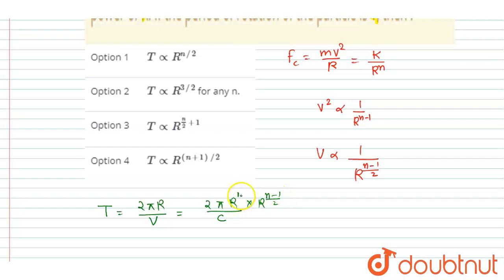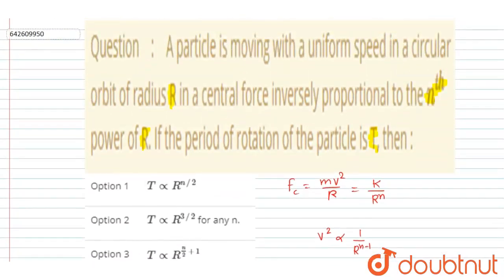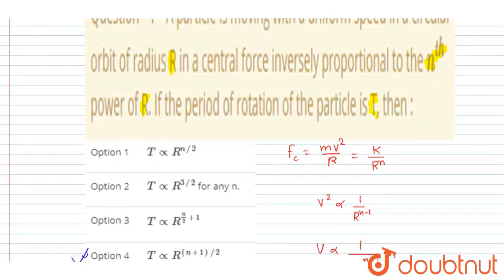You can see clearly, now we can write here the T is directly proportional to R to the power N plus 1 by 2. Now you can check your option, option 4 is the correct one, simple. The correct option is R to the power N plus 1 by 2. So the question was this and we got the answer as R to the power N plus 1 by 2.